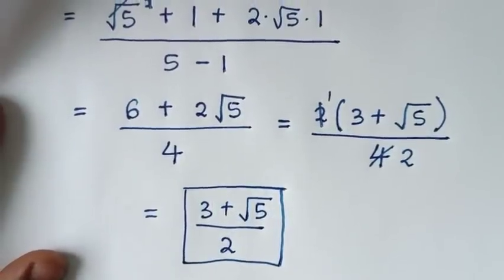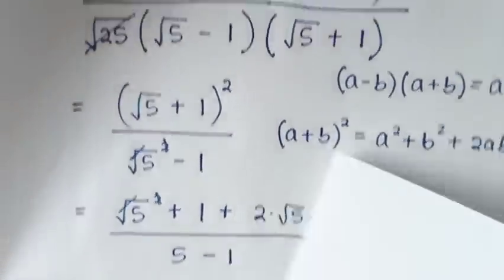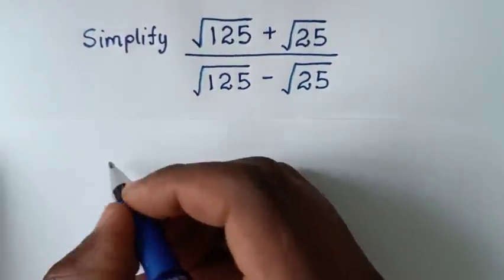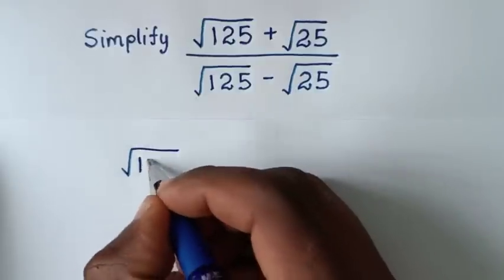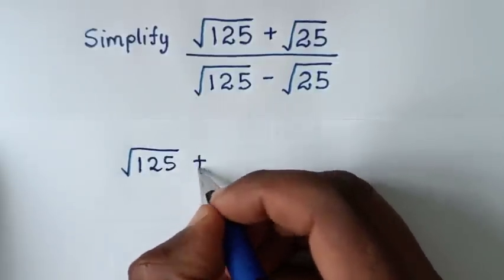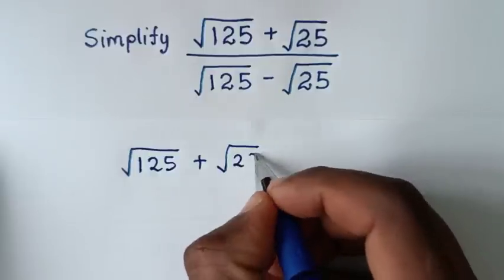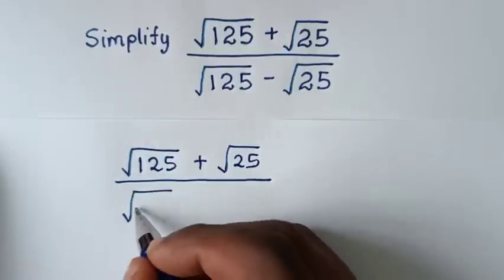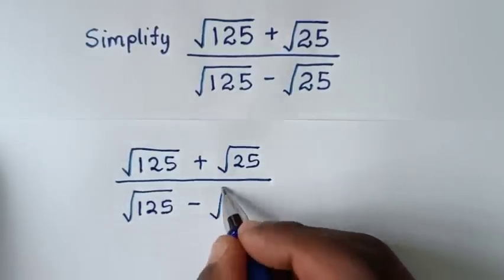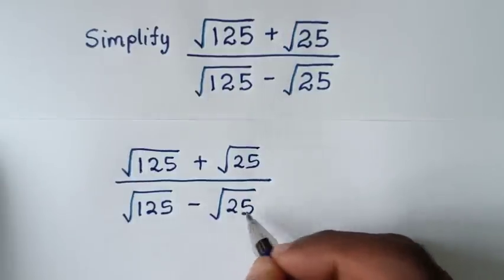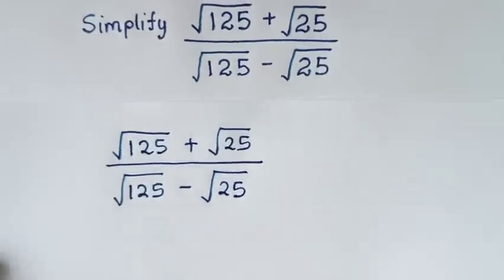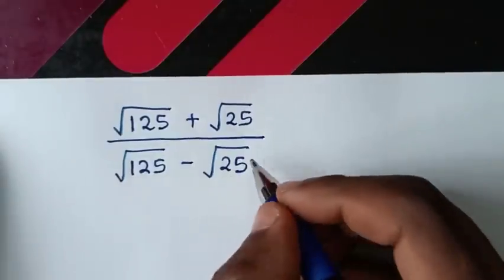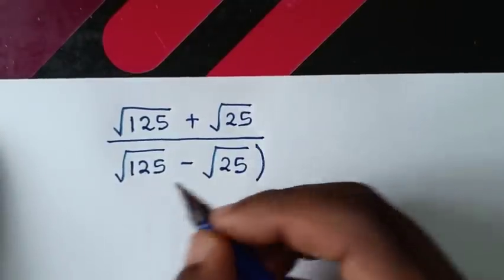Now we solve using Method 2. We restate the problem: square root of 125 plus square root of 25, over square root of 125 minus square root of 25. The first step is to rationalize the denominator.